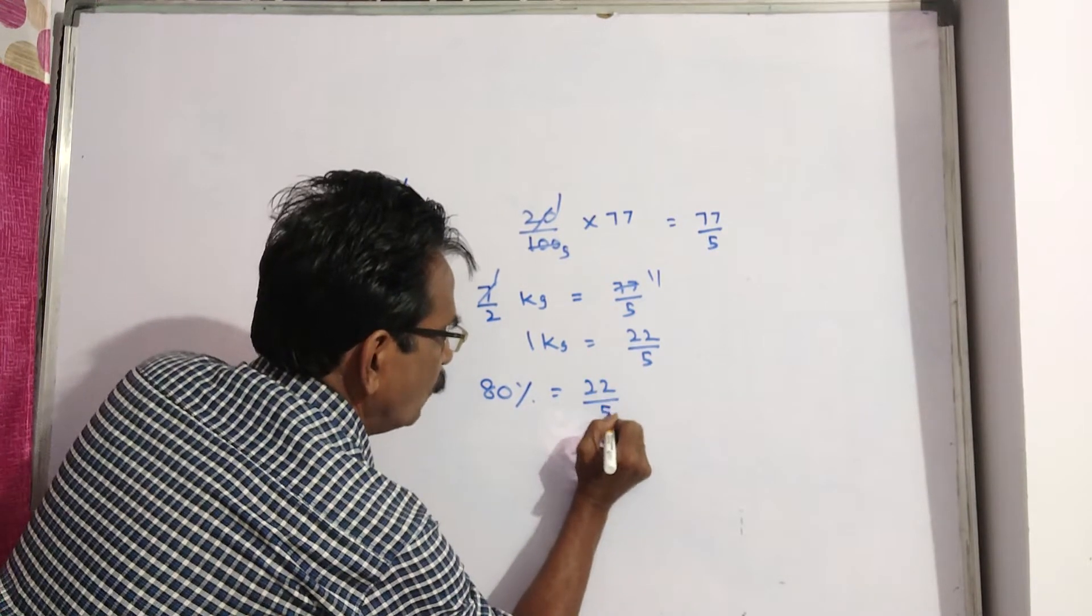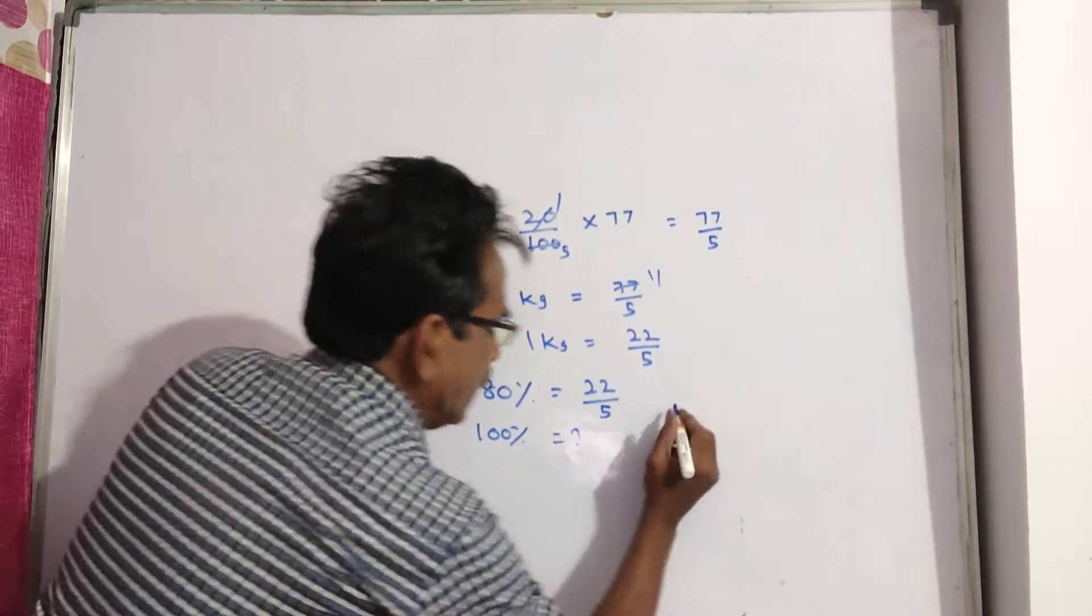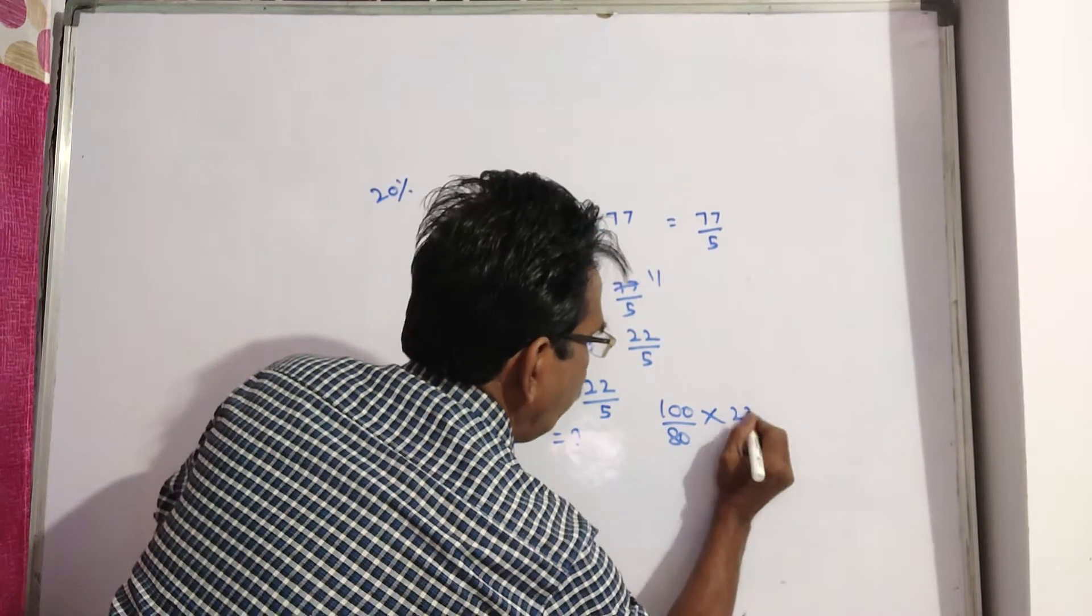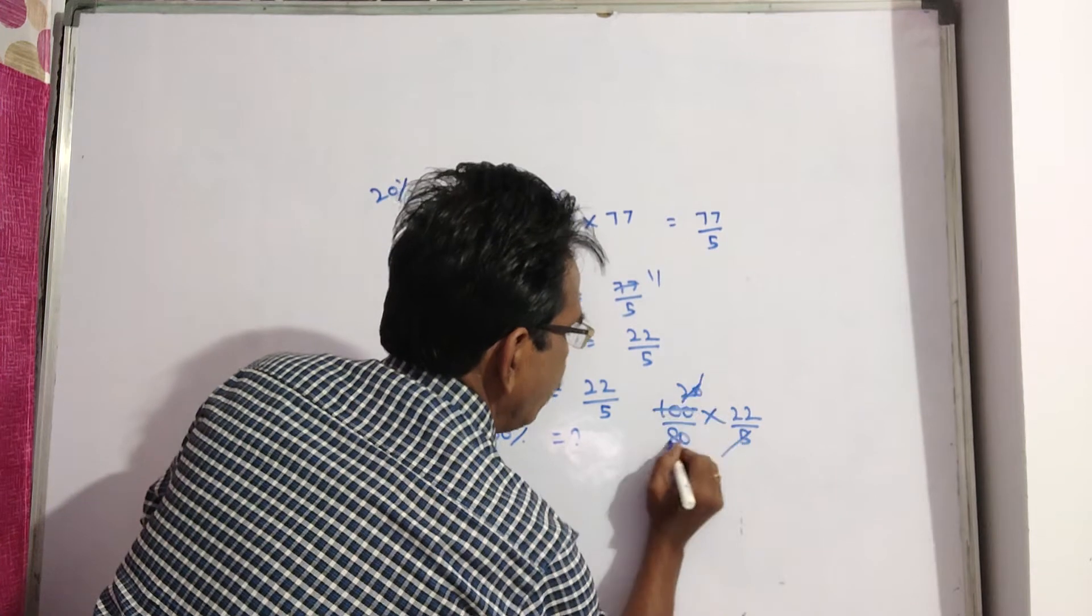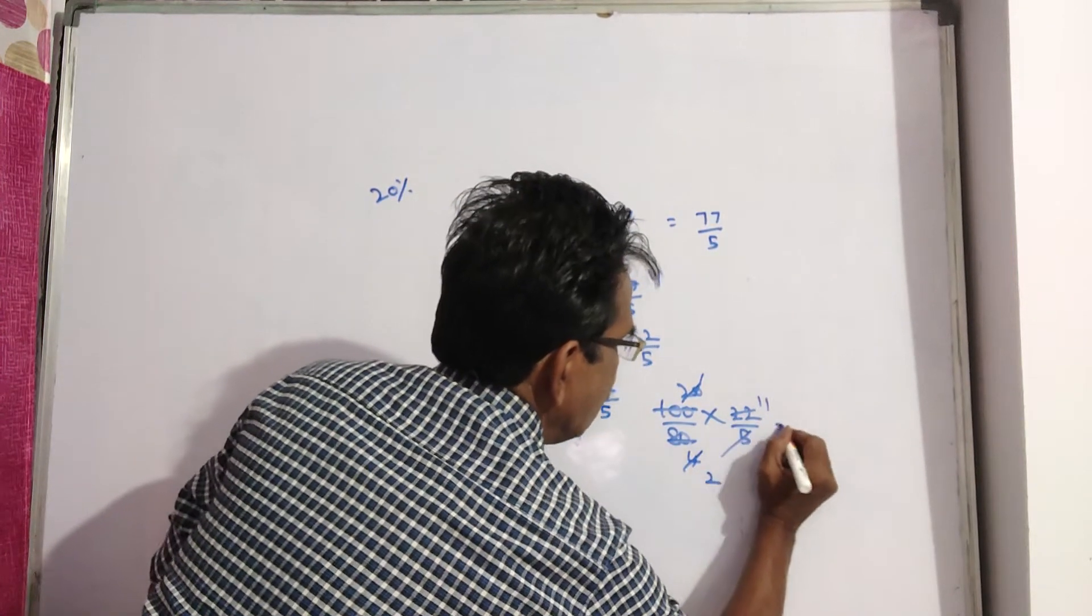So, if 80% is equal to 22 by 5, then what is 100%? 100 by 80 into 22 by 5. 5 twenties, 2 fours, 2 twos, 2 elevens—11 by 2.